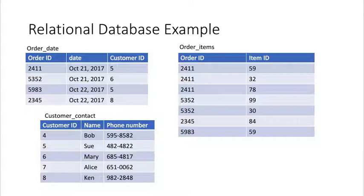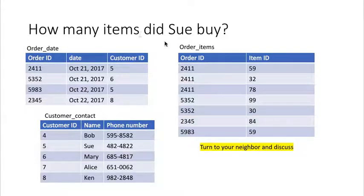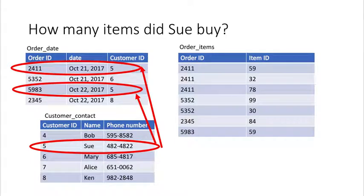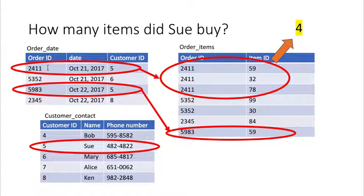With those three tables, we can ask: how many items did Sue buy? We find Sue has customer ID number five, and in the order table customer number five placed two orders — 2411 and 5983 — and those order IDs correlate to a set of items; specifically there were four items. That's the answer in a relational database.